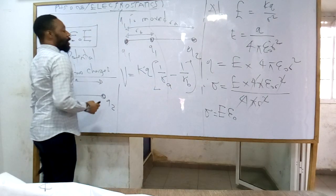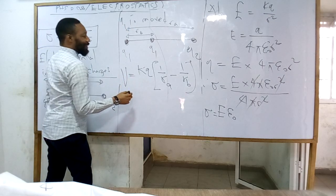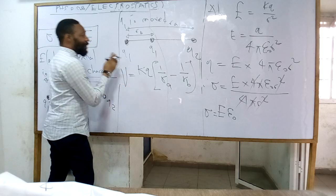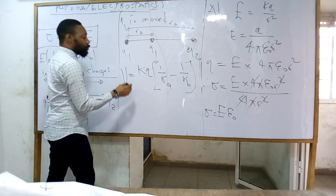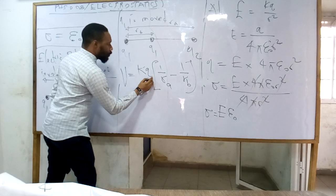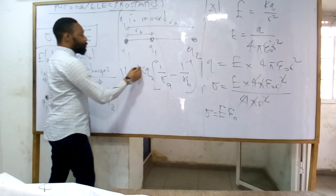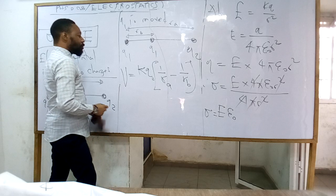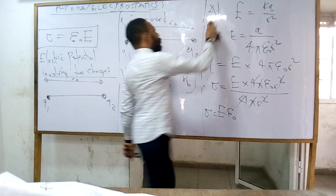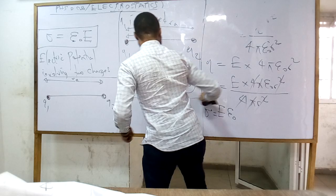How do I know which Q to use? It is the Q that is not moved. I am assuming Q1 is moved, so what I am going to use is Q2, because Q2 is not moved — it is Q1 that is moved to a new location. So that is the formula for your electric potential.